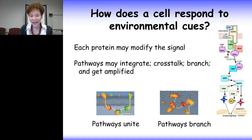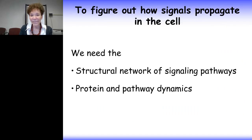The proteins that relay the signal make up a signaling pathway. Along the way, each protein may modify the signal. Pathways may integrate, as we see at the bottom left-hand side panel. They may cross-talk, as we see on the right-hand side diagram. They can branch and get amplified.